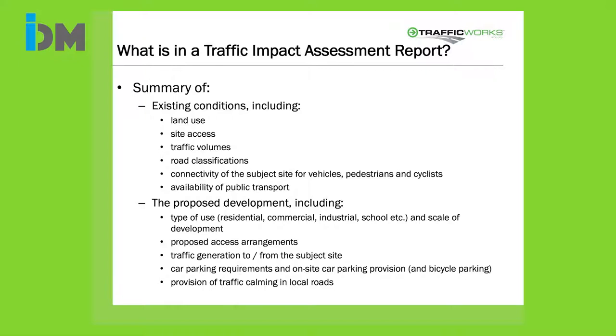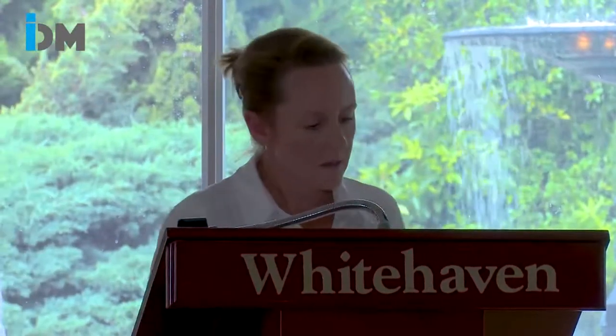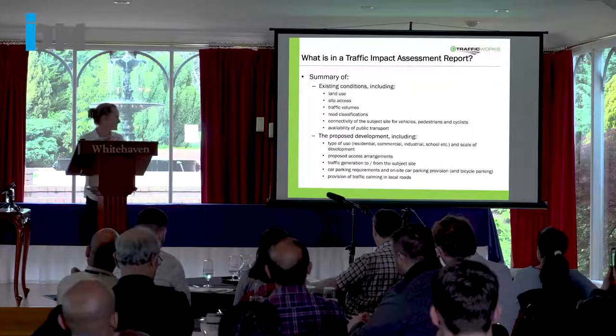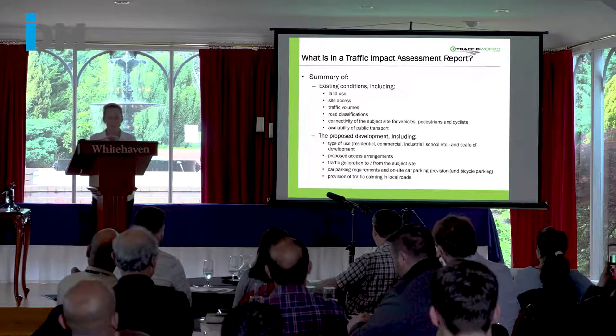It needs to cover the connectivity of the site for vehicles, pedestrians and cyclists, and the availability of public transport if relevant. Then it needs a summary of the proposed development - what type of use is proposed and at what scale, whether it's residential, commercial, industrial or a school. The proposed access arrangements, whether it's one access or multiple accesses. It needs to demonstrate the traffic generation to and from the site, outline car parking requirements, whether relying on on-street parking, bicycle parking, and for residential subdivisions potentially traffic calming in local roads.